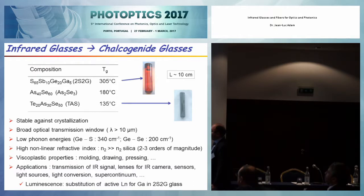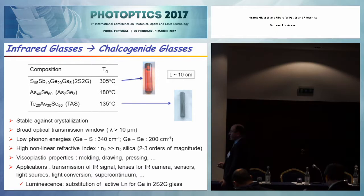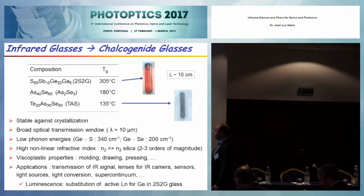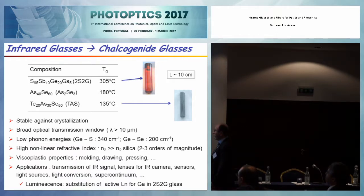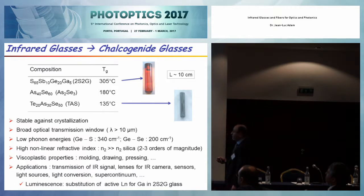They are very stable against crystallization — very stable as far as the glassy state is concerned. As you can see here, we can prepare quite large rods, typically 10 centimeters in length, and in diameter they can range from 1 centimeter up to 2, 3, even 5 centimeters.